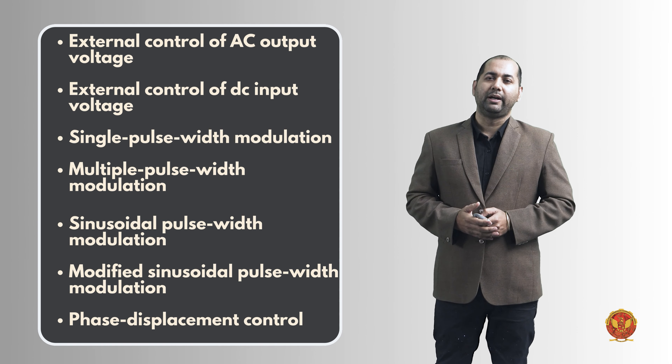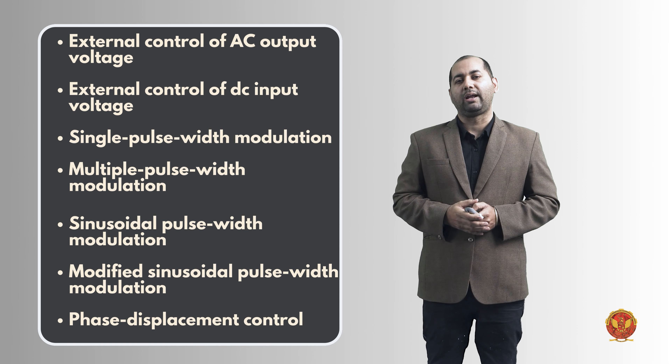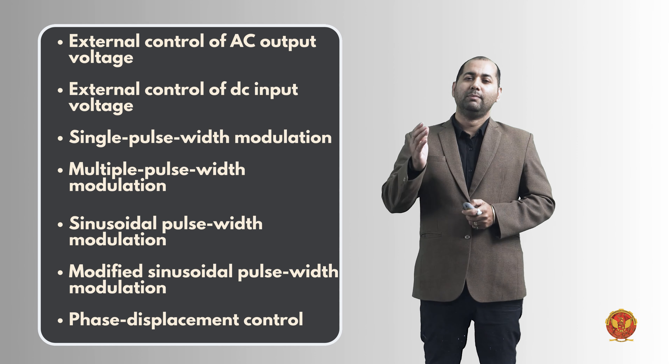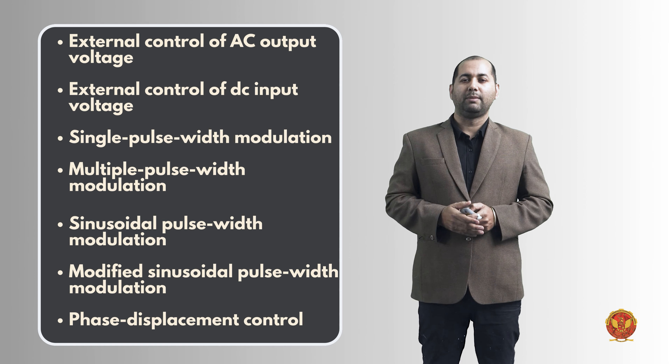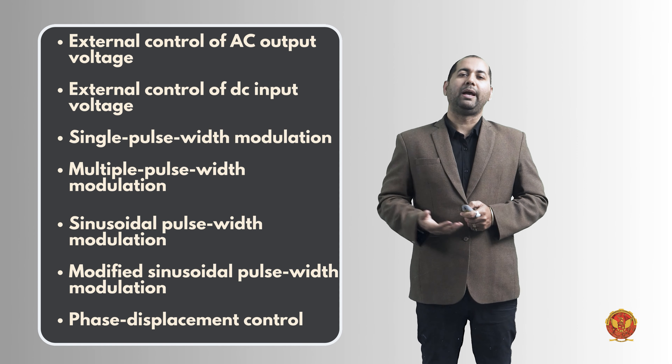The third method is single pulse width modulation. We already know pulse width modulation in detail, but in single pulse width modulation, we normally change the pulse width and modulate the output voltage to control it. We are going to read the details about this.